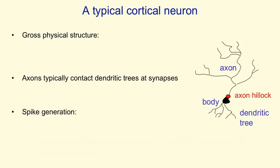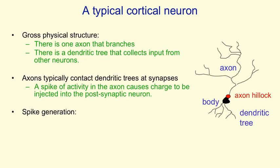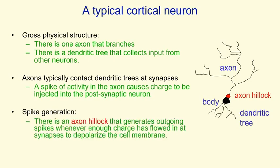A typical cortical neuron has a gross physical structure that consists of a cell body and an axon where it sends messages to other neurons, and a dendritic tree where it receives messages from other neurons. Where an axon from one neuron contacts a dendritic tree of another neuron, there's a structure called a synapse, and a spike of activity travelling along the axon causes charge to be injected into the postsynaptic neuron at a synapse. A neuron generates spikes when it's received enough charge in its dendritic tree to depolarise a part of the cell body called the axon hillock, and when that gets depolarised, the neuron sends a spike out along its axon — the spike is just a wave of depolarisation that travels along the axon.